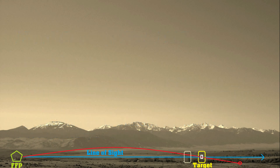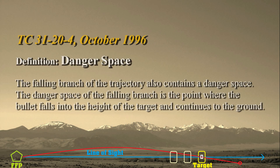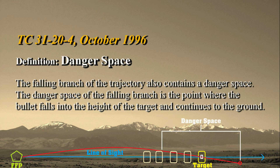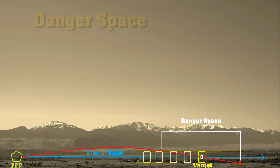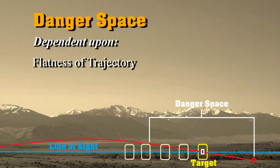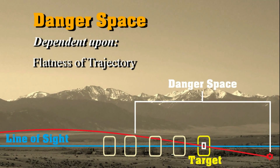TC 31-20-4 from 1996 states that the falling branch of the trajectory also contains a danger space. The danger space of the falling branch is the point where the bullet falls to the height of the target and continues to the ground. You can see that it's going to be dependent upon the flatness of your trajectory. If you have a flatter trajectory — a faster bullet with less drop — your danger space is going to be increased, giving you more wiggle room for allowable error in range determination.